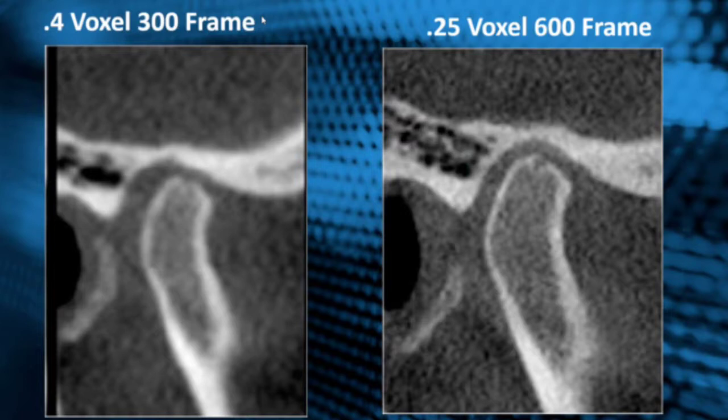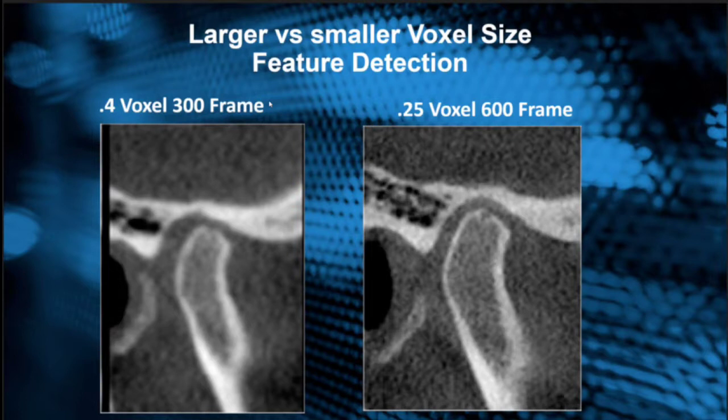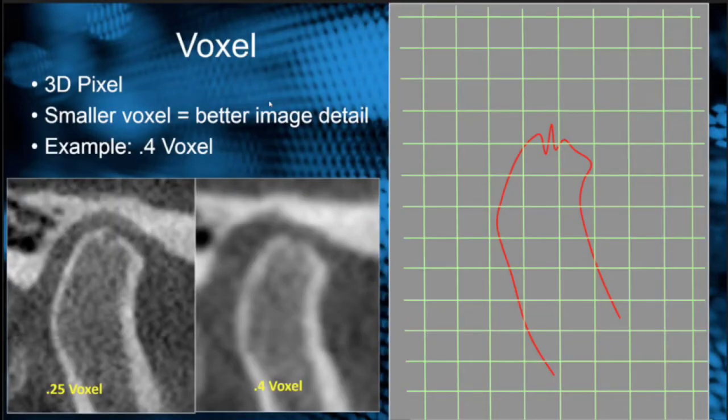At our imaging center, we use both low scan quality and high scan quality depending on each patient's case, and that's talked about in another lecture for choosing the scan protocol. But right now, let's talk about the differences between a low voxel and a high voxel scan.